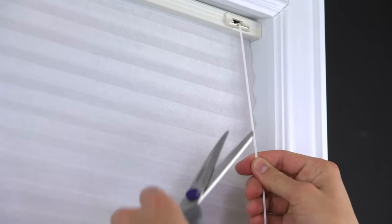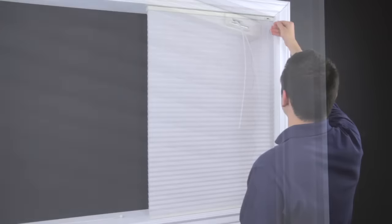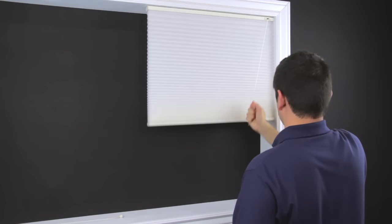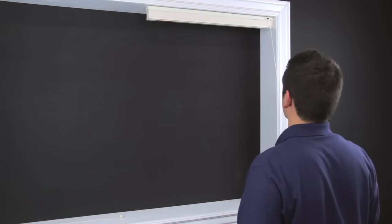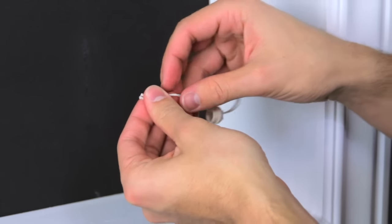Attach the condenser with the shade in the down position. Cut the strings evenly a few inches from the top. Tie the condenser on and attach the pull cord and tassel.